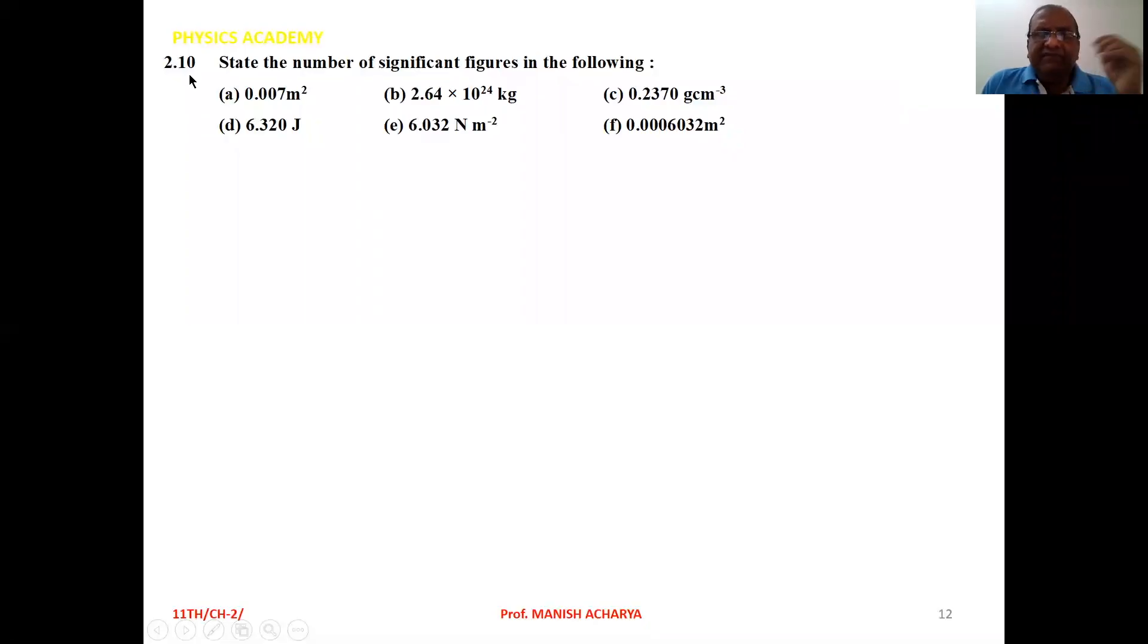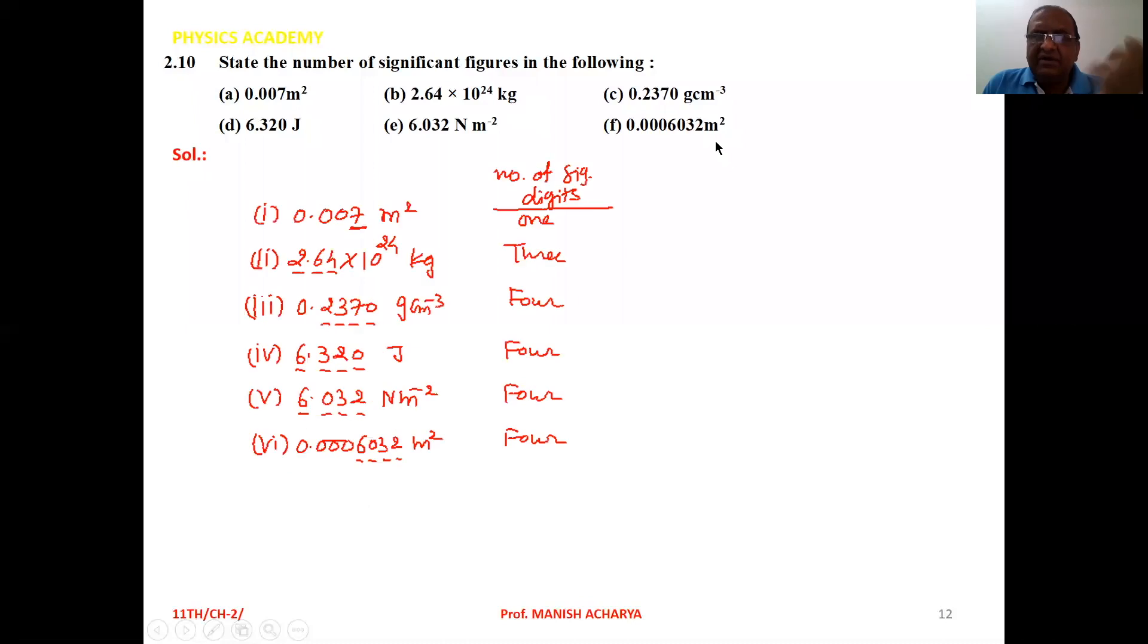Example 2.10: State the number of significant figures in the following. A: 0.007 m². B: 2.64 × 10²⁴ kg. C: 0.2370 g/cm³. D: 6.320 J. E: 6.032 N/m². F: 0.0006032 m². Now very simple question.